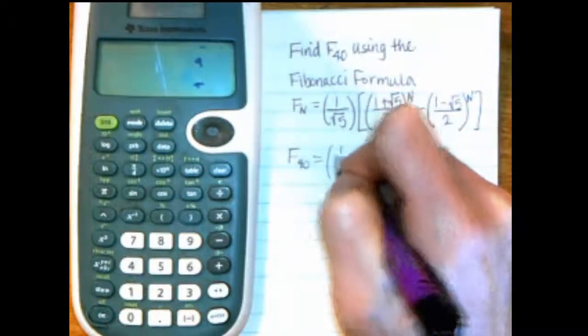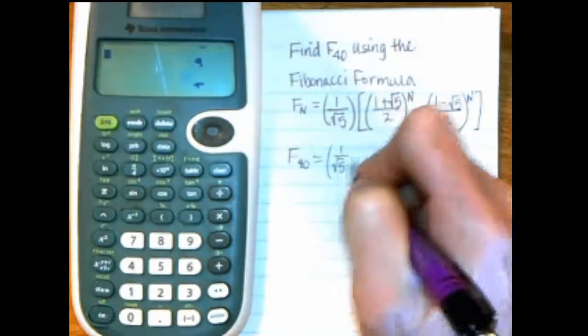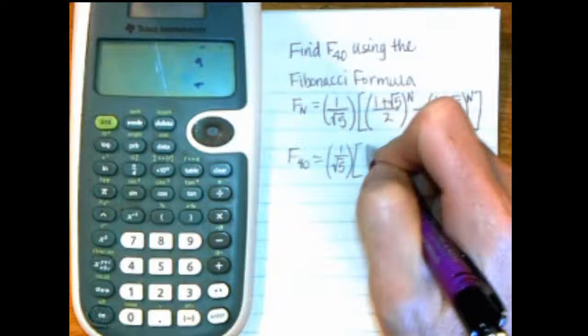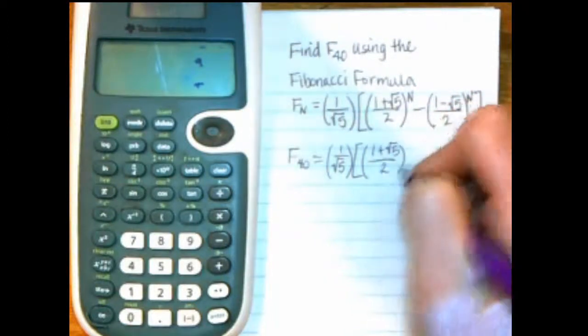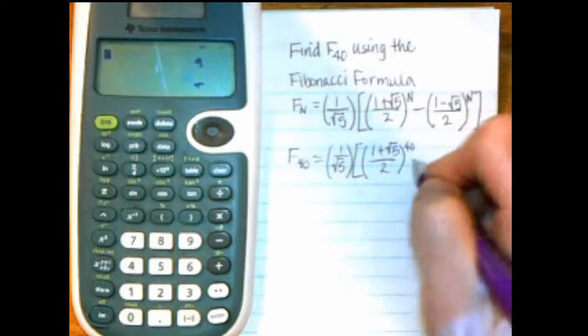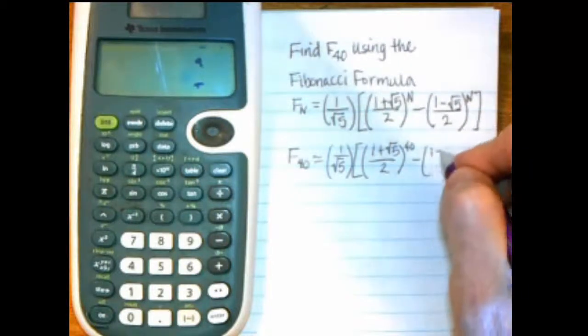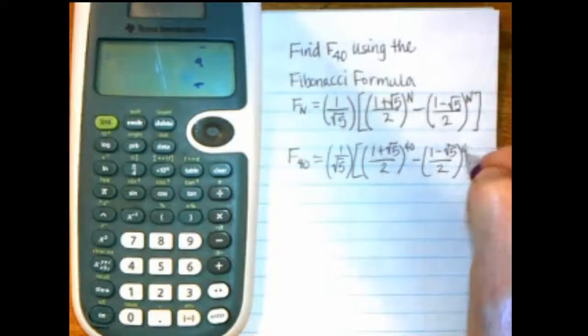So I'll have 1 over the square root of 5. 1 plus the square root of 5 over 2 raised to the 40th power minus 1 minus the square root of 5 over 2 raised to the 40th power.